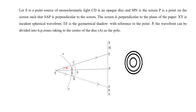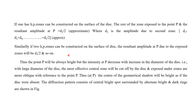The wavefront can be divided into half-period zones, taking center A as a pole. The wavefront can be subdivided into different numbers of zones. The first zone is constructed on the surface of the disk, and the rest of the zones are exposed at point P.